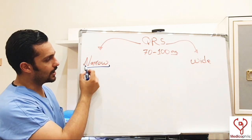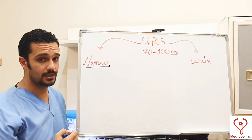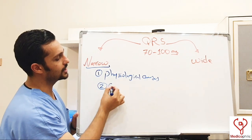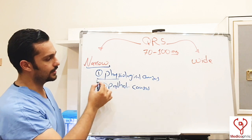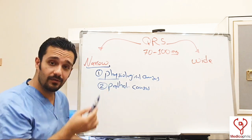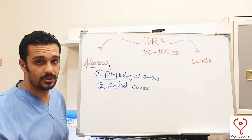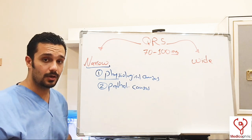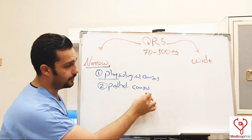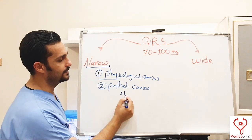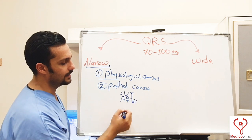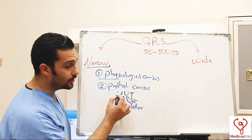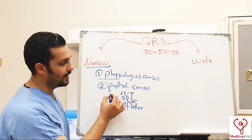Let's begin with the narrow QRS complex. We have classified it into physiological and pathological causes. The physiological cause is when the signal is coming from above the ventricle — the SA node — for example, physiological sinus tachycardia without any abnormality, where QRS is narrow. In pathological causes, examples include SVT, atrial fibrillation, and atrial flutter — these all produce a narrow QRS complex.